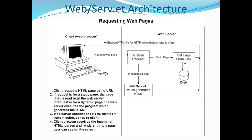Key points to remember when writing code for J2EE: the client requests an HTML page using a URL. If the request is for a static page, the page is read from the web server. If the request is for a dynamic page, the web server executes a program that generates the HTML. The web server encodes the HTML for HTTP transmission and sends it to the client, whose browser receives, parses, and renders it into a page the user can see.